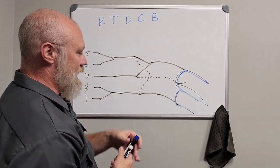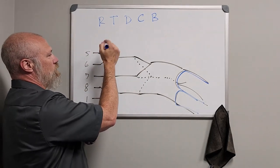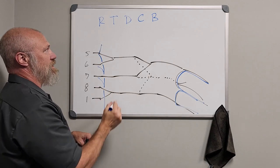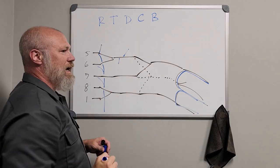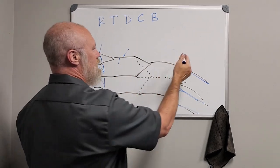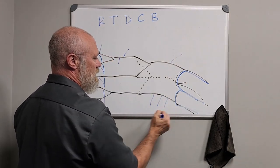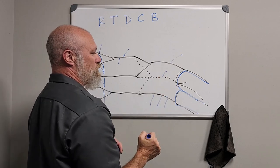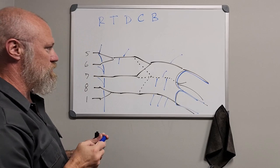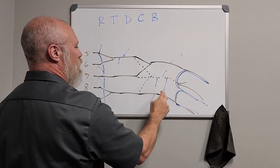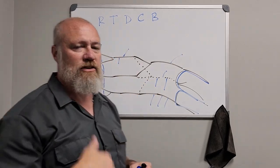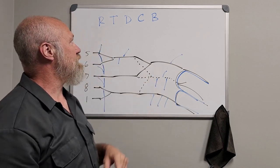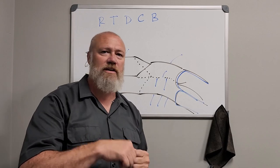Back to the branches: root of C5 gives the dorsal scapular nerve. C5, C6, and C7 contribute to the long thoracic nerve. The superior trunk has the nerve to subclavius and the suprascapular nerve. The lateral cord has one branch — lateral pectoral nerve. The medial cord has three: medial pectoral, medial brachial cutaneous, medial antebrachial cutaneous. The posterior cord has thoracodorsal and upper and lower subscapular nerves. Final count: five terminal branches plus eleven additional equals sixteen nerves total off the brachial plexus.